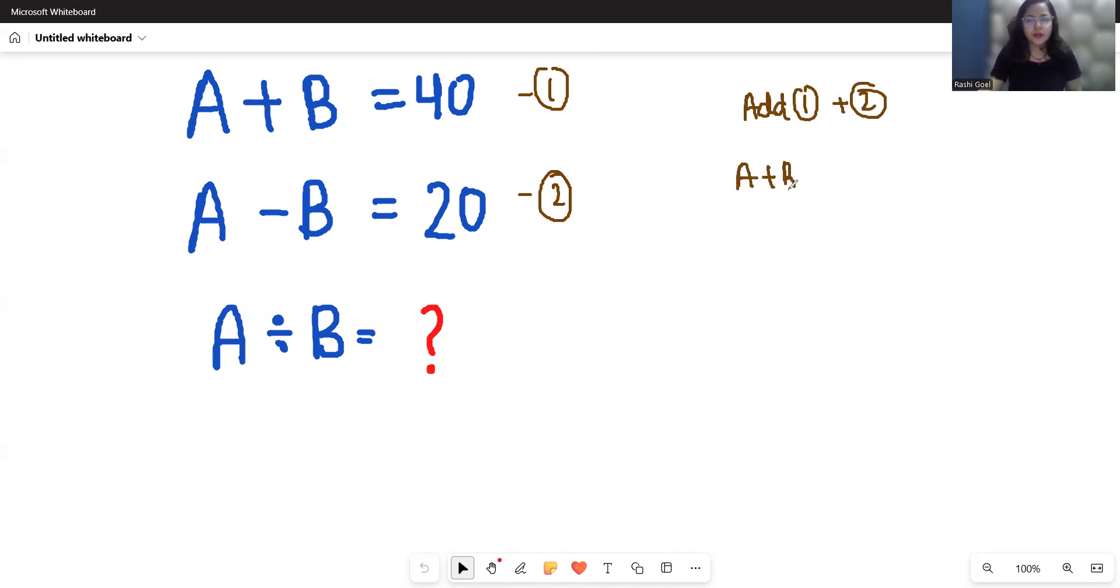So left hand side, A plus B plus A minus B equals 40 plus 20. A plus A is 2A, and positive B will cancel out the negative B, giving us 60. So A equals 60 divided by 2, that is 30.